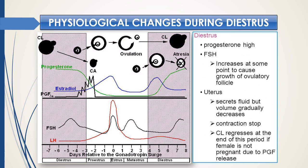The physiological changes during diestrus — the last phase of the estrus cycle — include an increase in the secretion of progesterone from the follicles of the ovaries. Follicle-stimulating hormone also increases at some point to cause growth of ovulatory follicles. In the uterus, the glands secrete fluid but volume gradually decreases, and contractions stop. Then the corpus luteum slowly regresses.